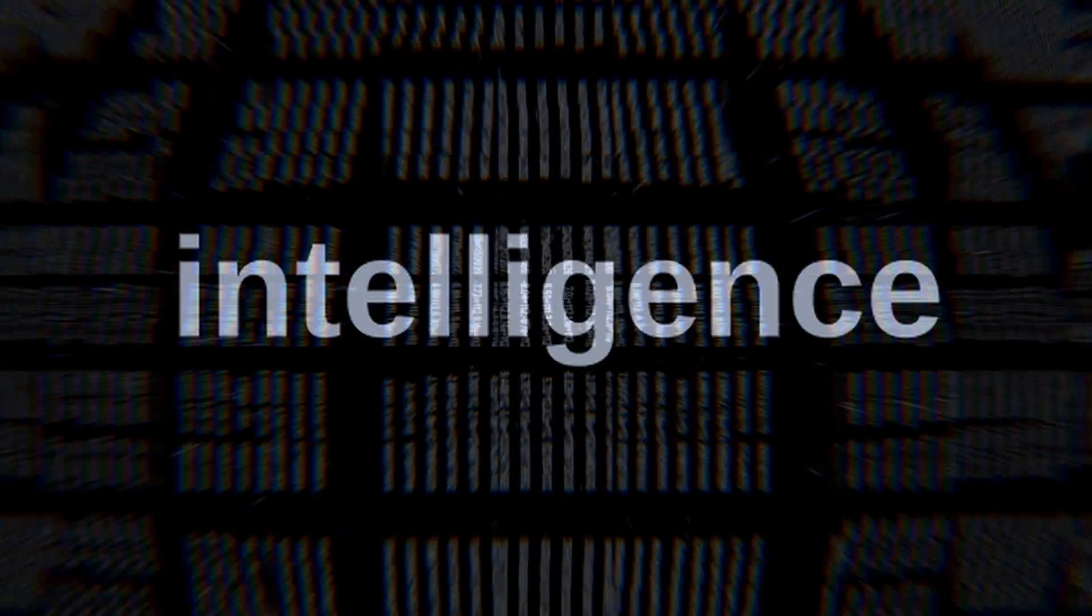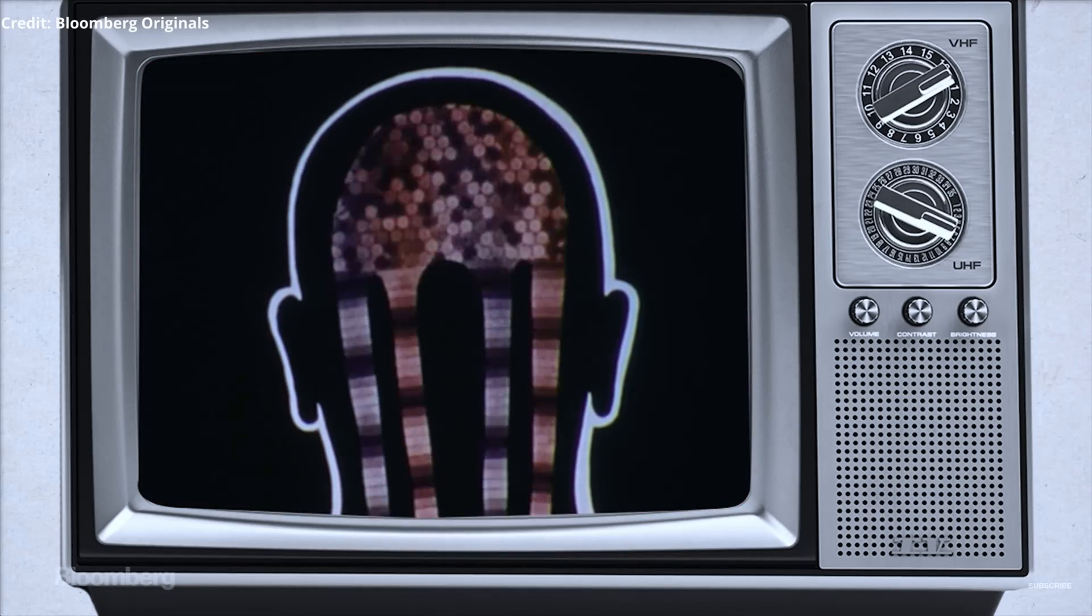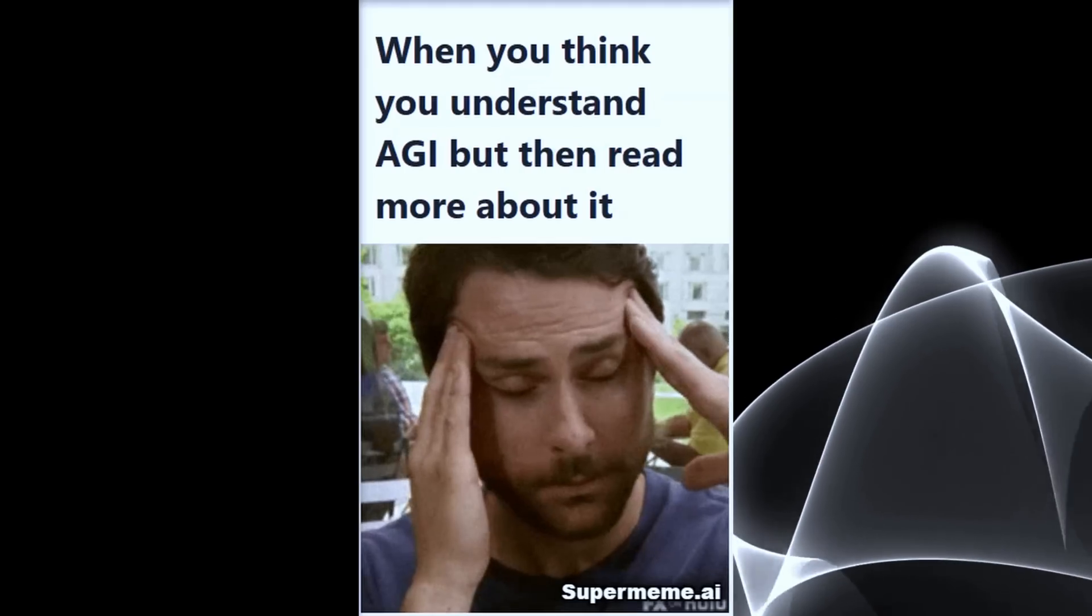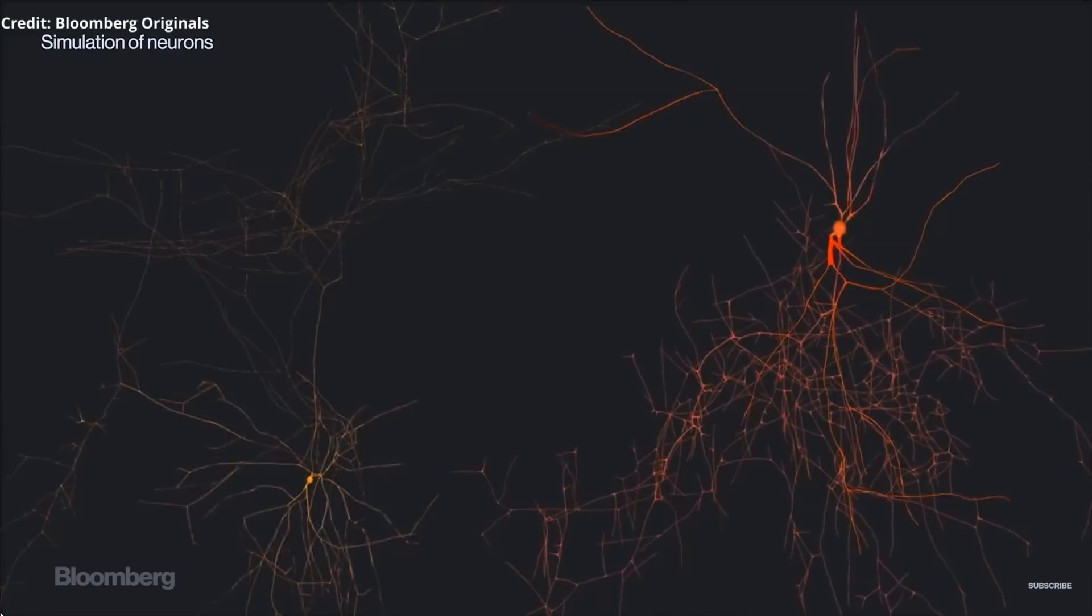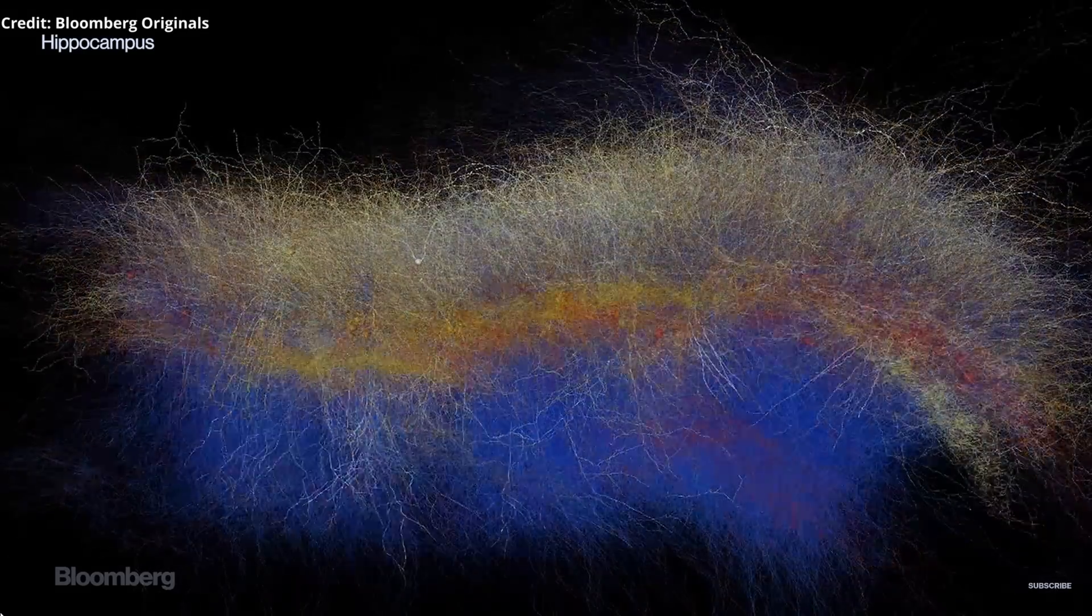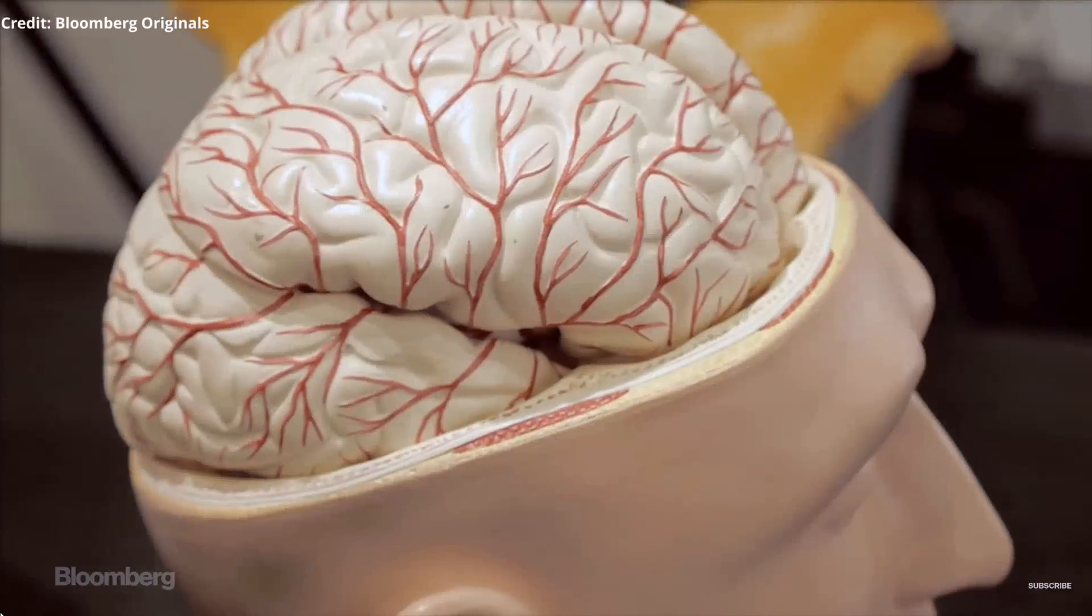In fact, Kurzweil predicts the 2030s to be when we achieve true artificial general intelligence, known as AGI, and quickly move towards the event horizon of the singularity. But that's just the beginning. Shockingly, this exponential growth in computing power will give a single $1,000 device the computational power of all human brains combined, all by 2030.